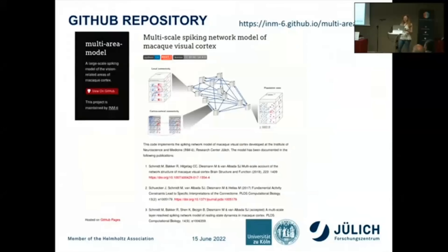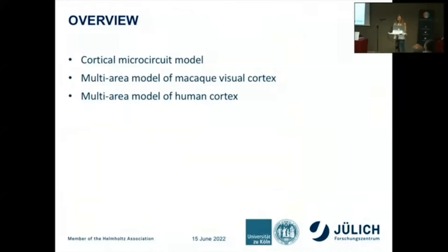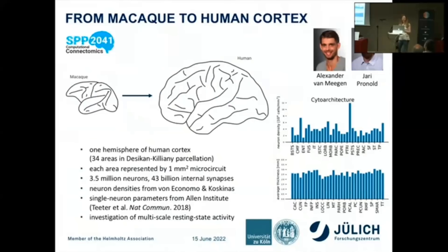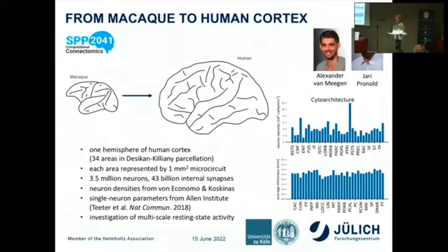We made the entire source code publicly available for others to build on. Next, we wanted to explore human cortex, considering an entire hemisphere — not just selected areas — but in a coarse parcellation. The total number of areas and neurons is similar to the macaque model, but an important difference is that neurons receive more synapses per neuron, about twice as many. Neuron densities and laminar thicknesses are taken from the classic publication by Von Economo and Koskinas. We again investigate multiscale resting state activity.